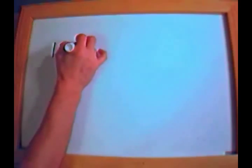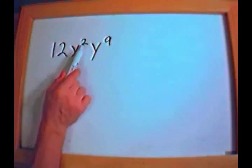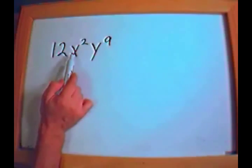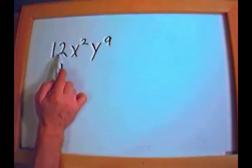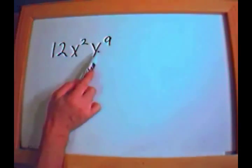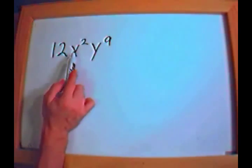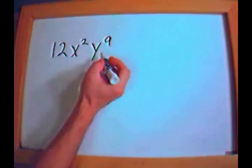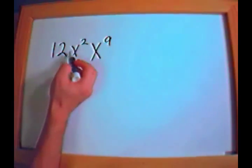I want to give you one example of when you can't add exponents together. Consider 12x squared y to the ninth. Don't be tempted to add 2 plus 9, because you can't — the bases have to be the same. You have x squared and y to the ninth, which are totally different variables, with 12 out front. There's absolutely nothing you can simplify here. If it were x to the ninth instead of y to the ninth, then yes — you could add — but as written, it's untouchable.